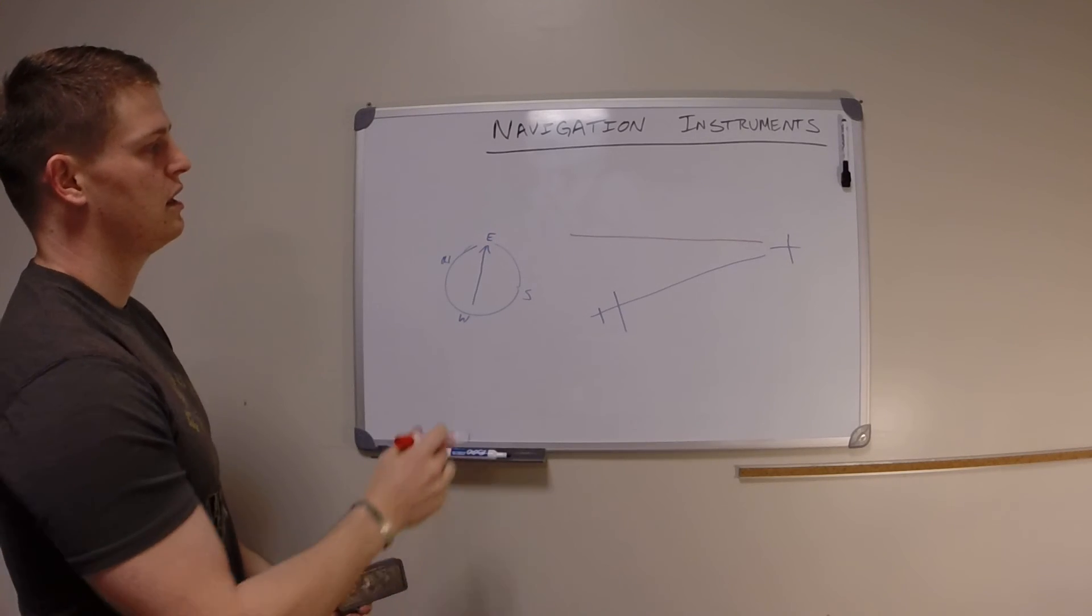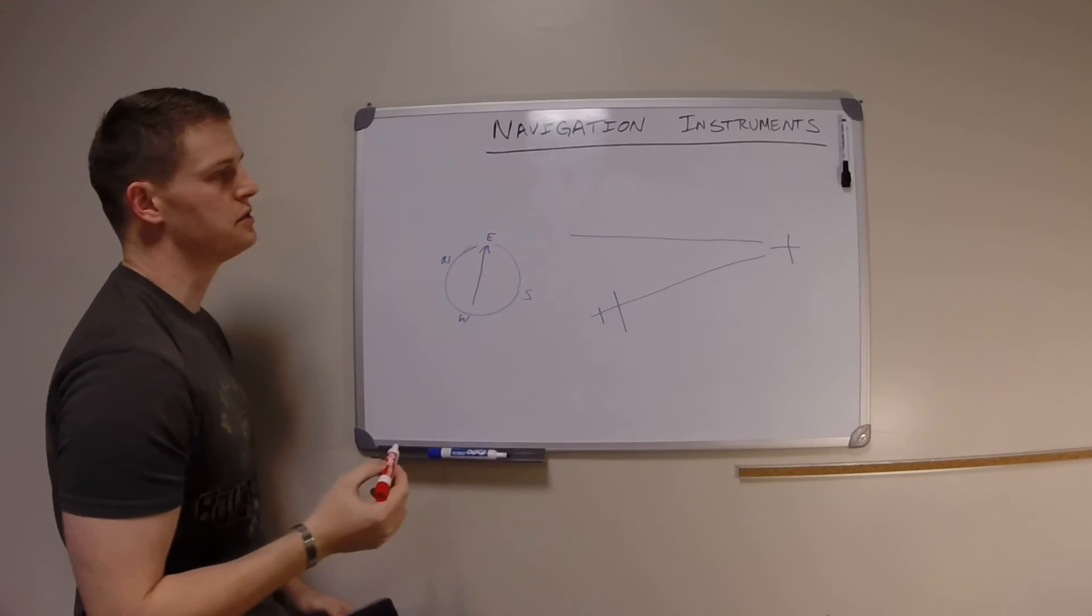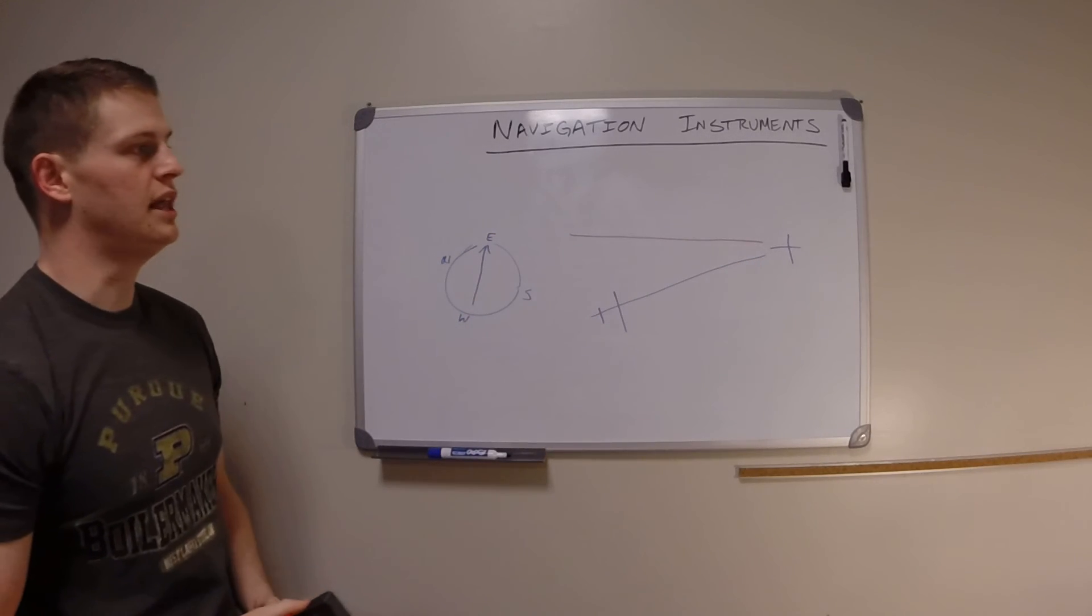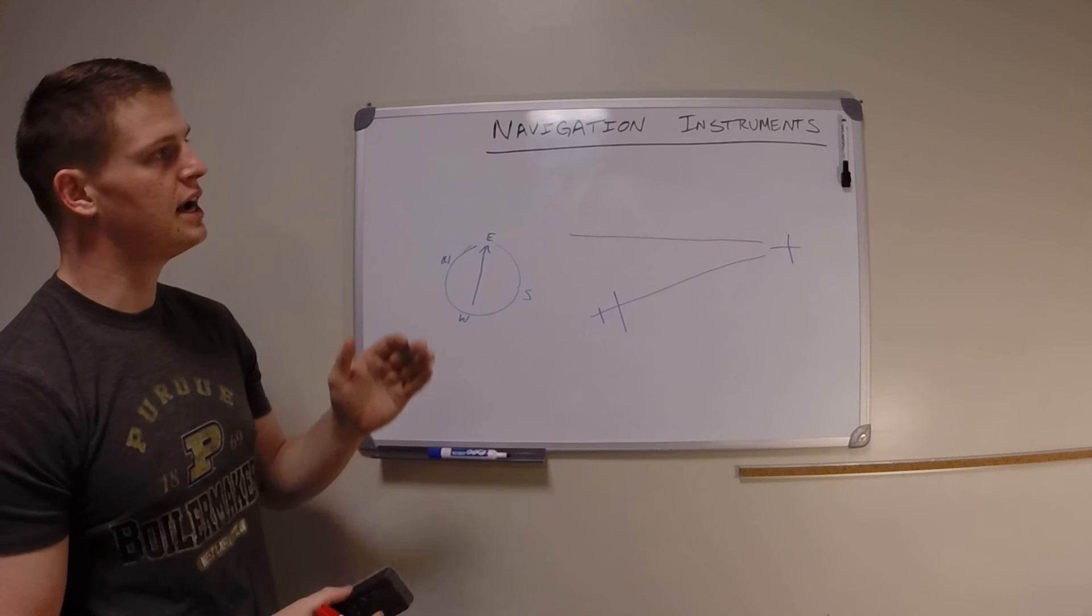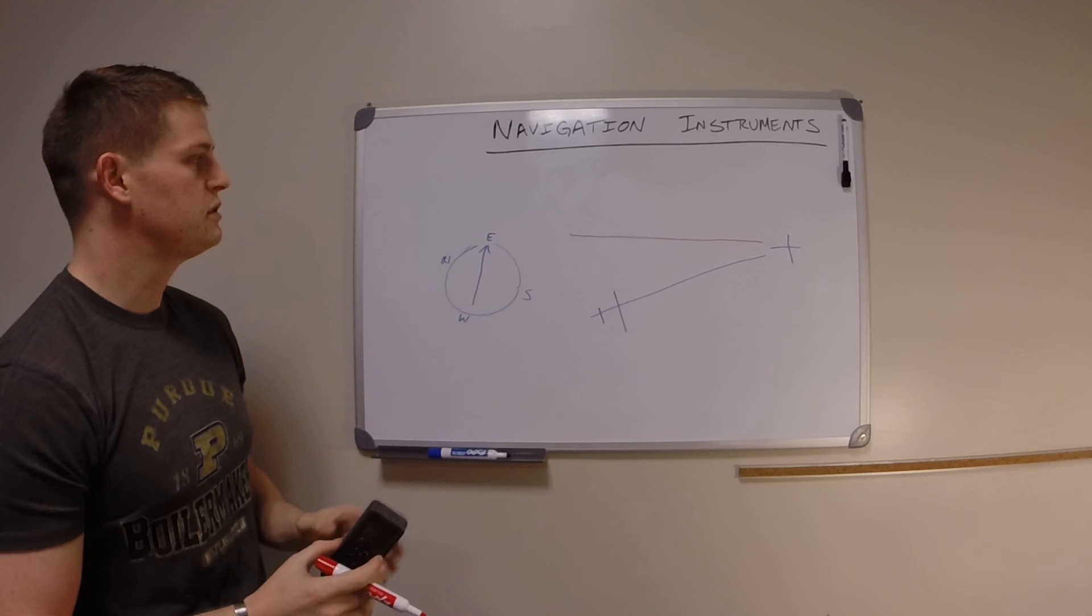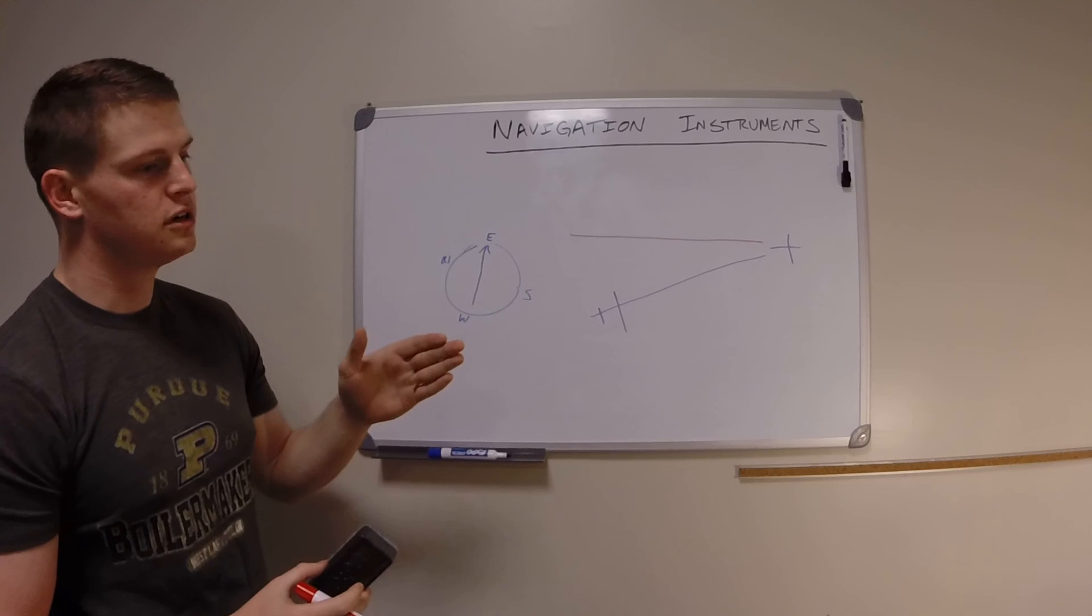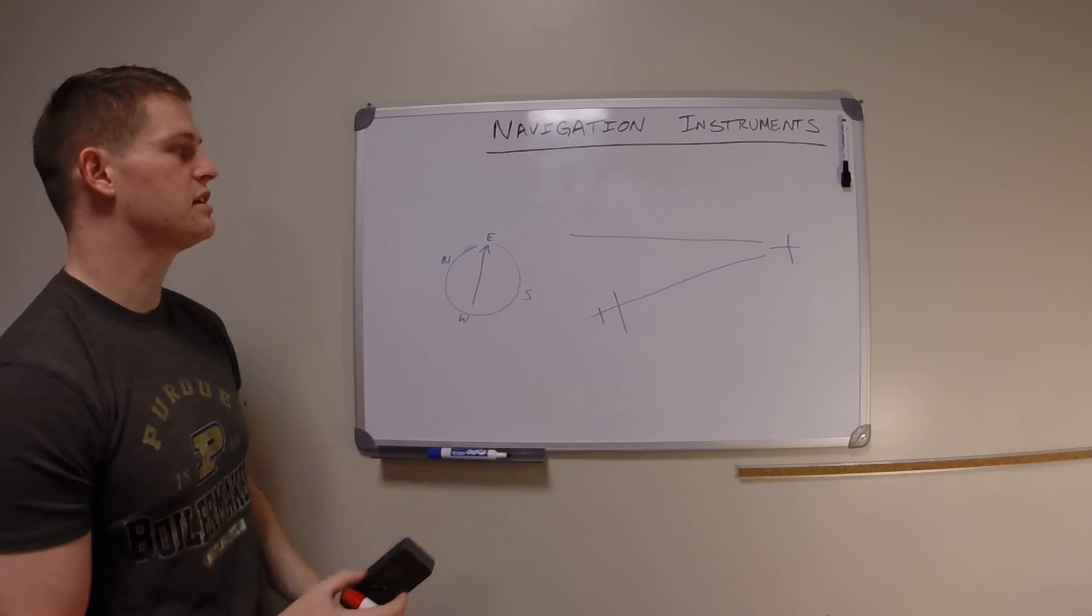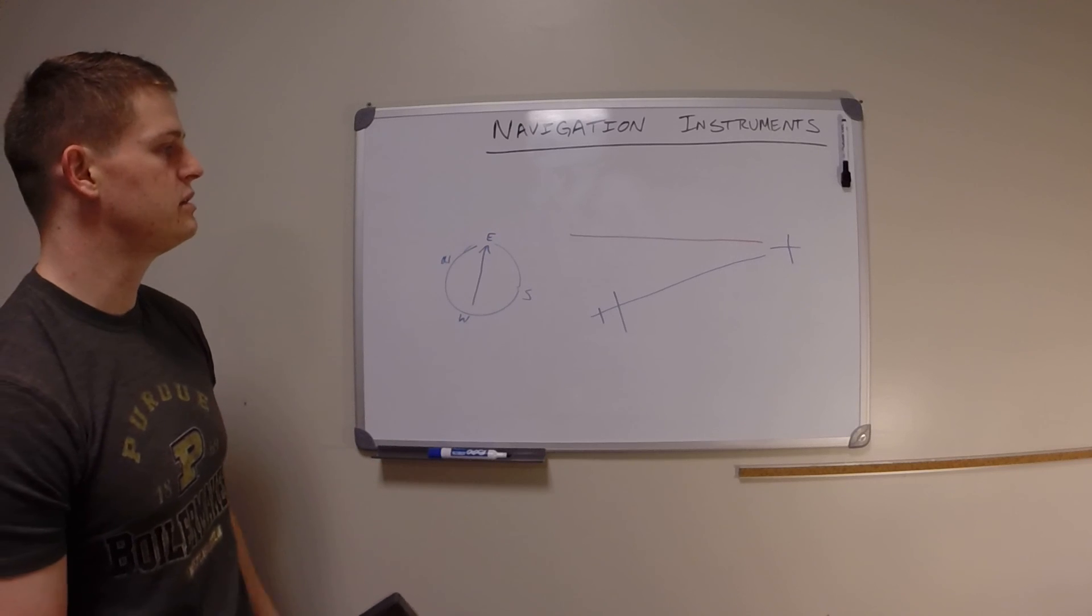So to correct back, you would have to go even further to a heading of maybe one zero zero or one one zero to correct back to get to this course, and then you would turn back to the left to re-intercept. So if you're off, you have to continue to turn into the way that you're off. If you want to be on a zero eight zero and you look and it's on a zero nine zero, you have to turn into that more to the right to initially correct. Then you re-intercept the zero eight zero, so you would come back down until the bearing pointer was again pointing at zero eight zero, then you would turn left again to re-intercept.